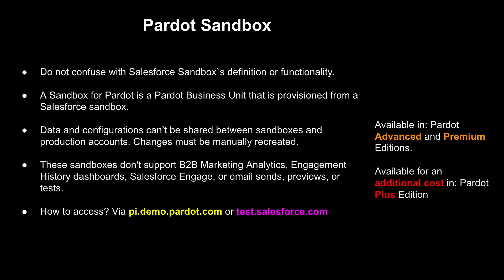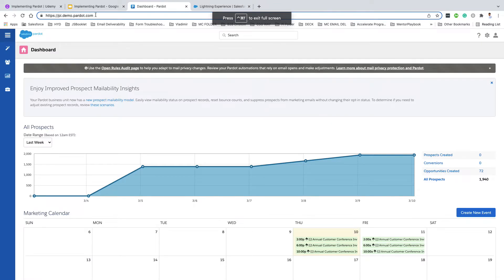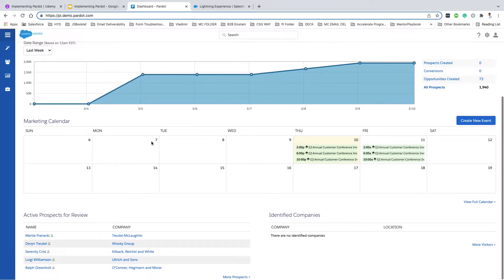You might be wondering how to access Product Sandbox. Product Sandbox is available as a Product Standalone app and as a Product Lightning app, but Product Sandbox does not support the Product Classic version, which will also be deprecated in the near future. To access Product Sandbox, you can simply go to pi.demo.product.com. Once you click on this, it will take you to login with Salesforce, and you'll use your Salesforce Sandbox credentials to log in.